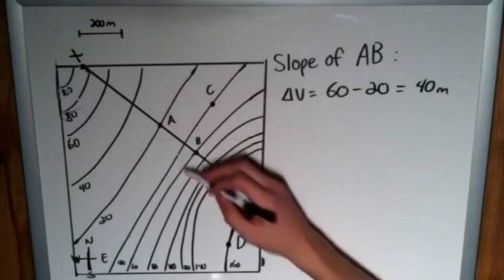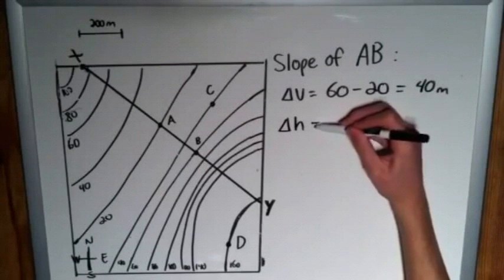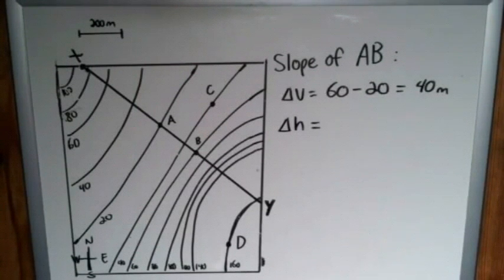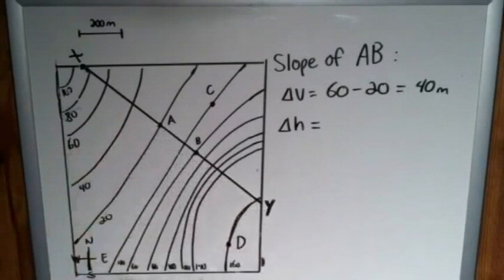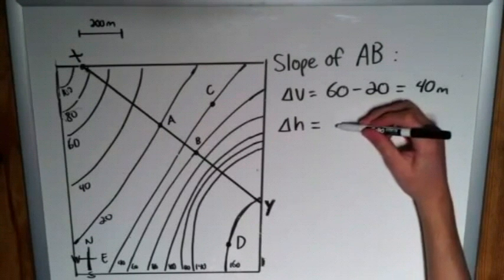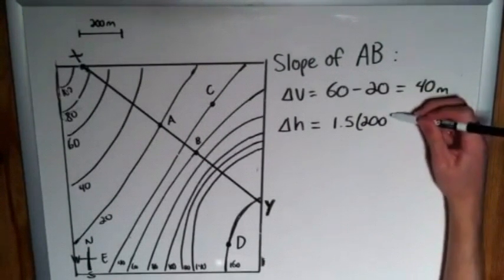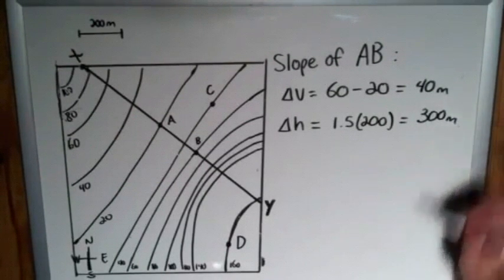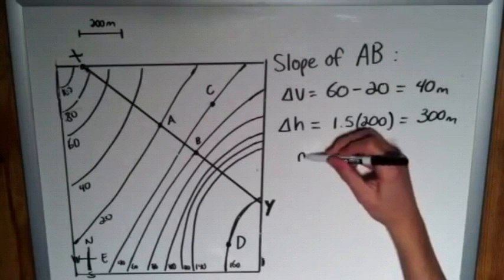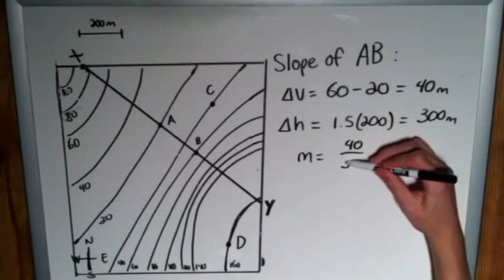And that is positive because we are going upwards. And then our horizontal difference is going to be... This is about 2.5 inches. So that's about 1.5 times 200, which, of course, simple mental math, that is about 300 meters.